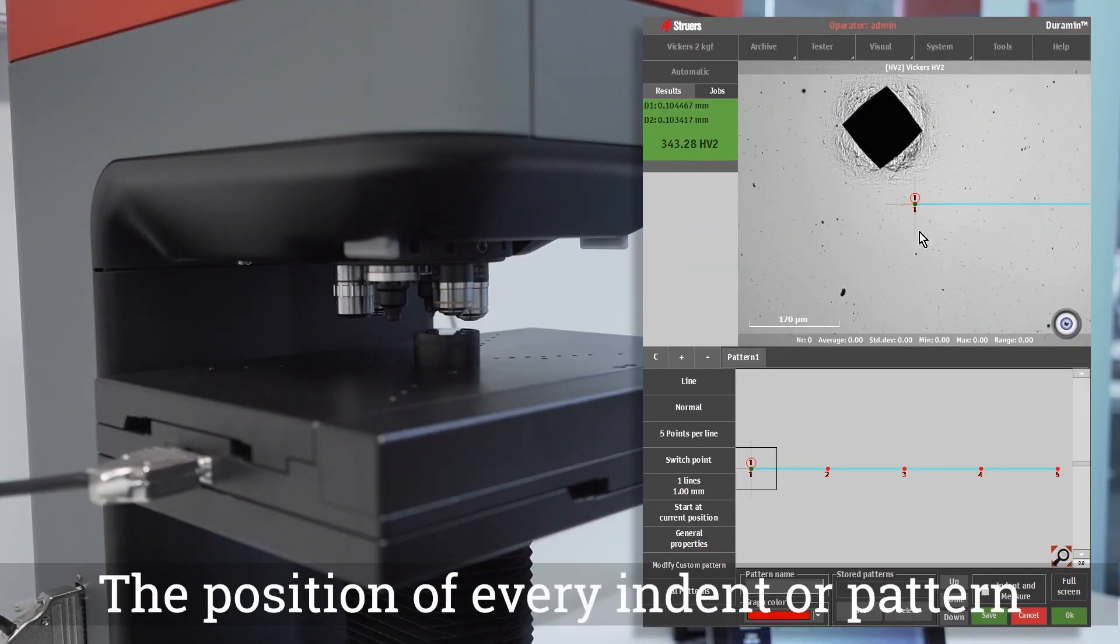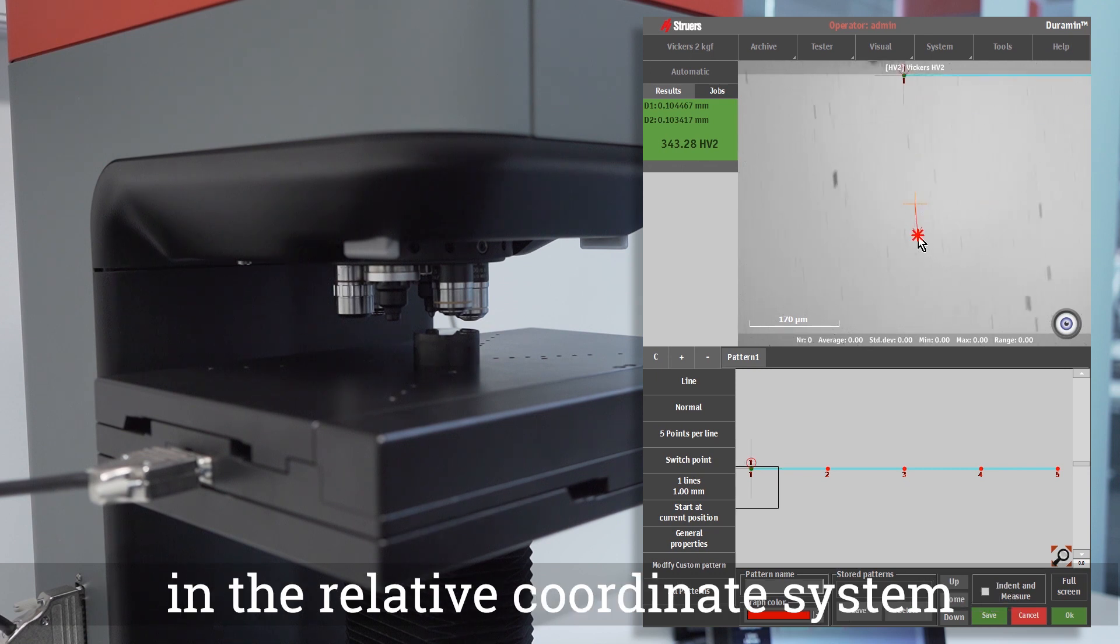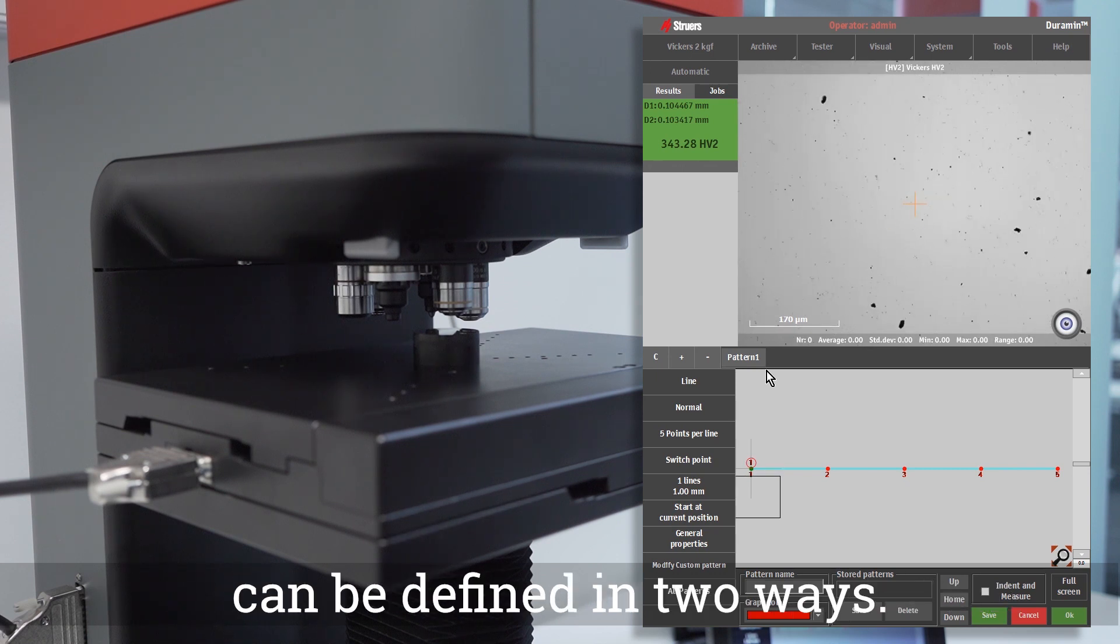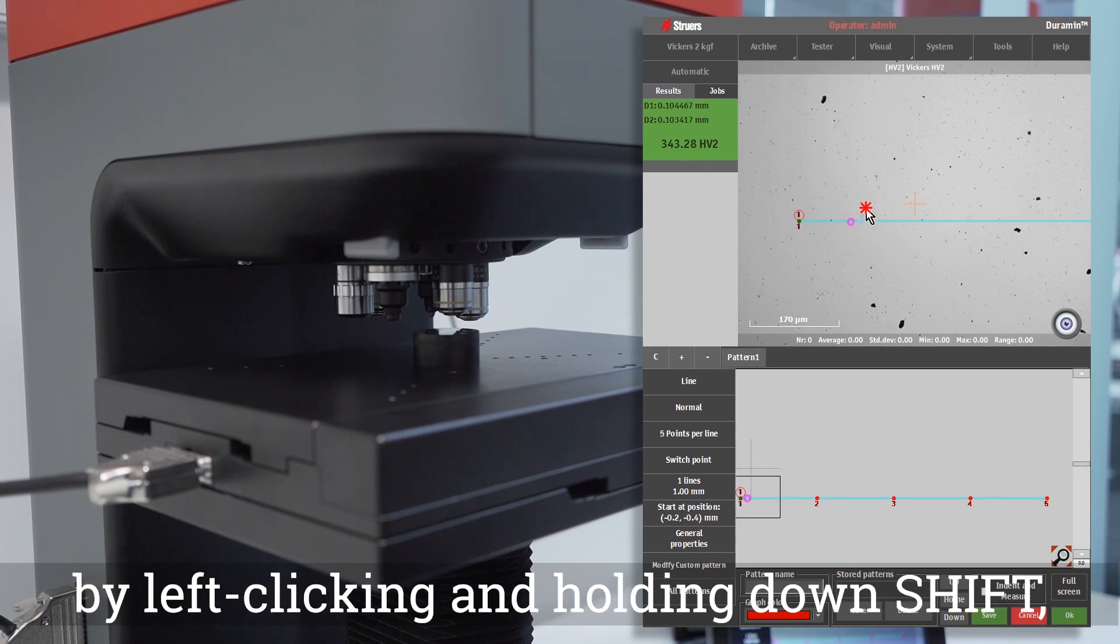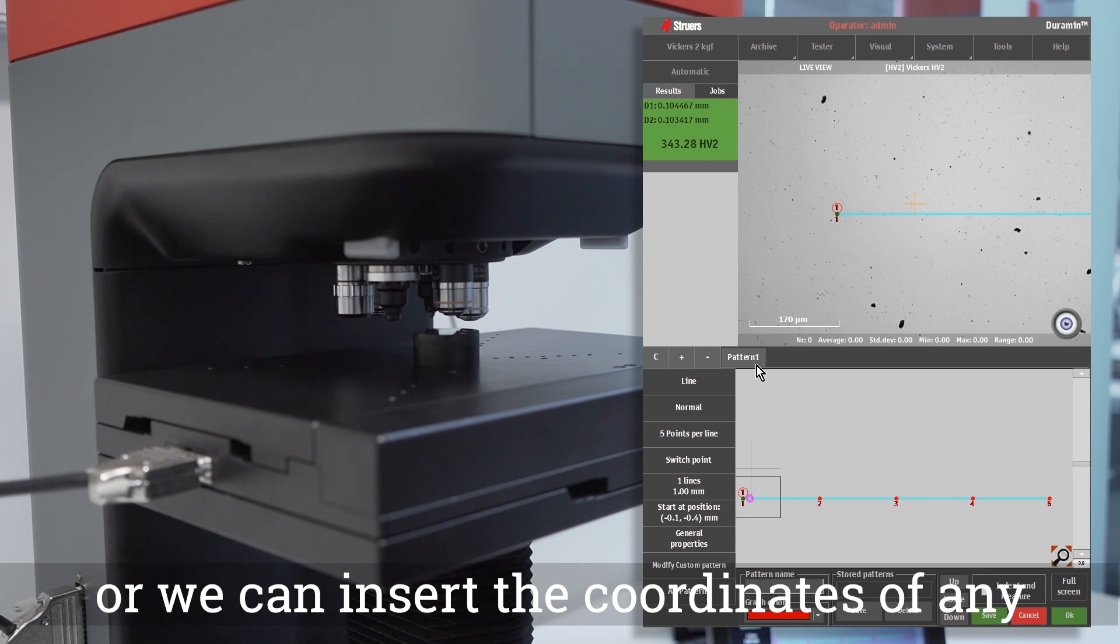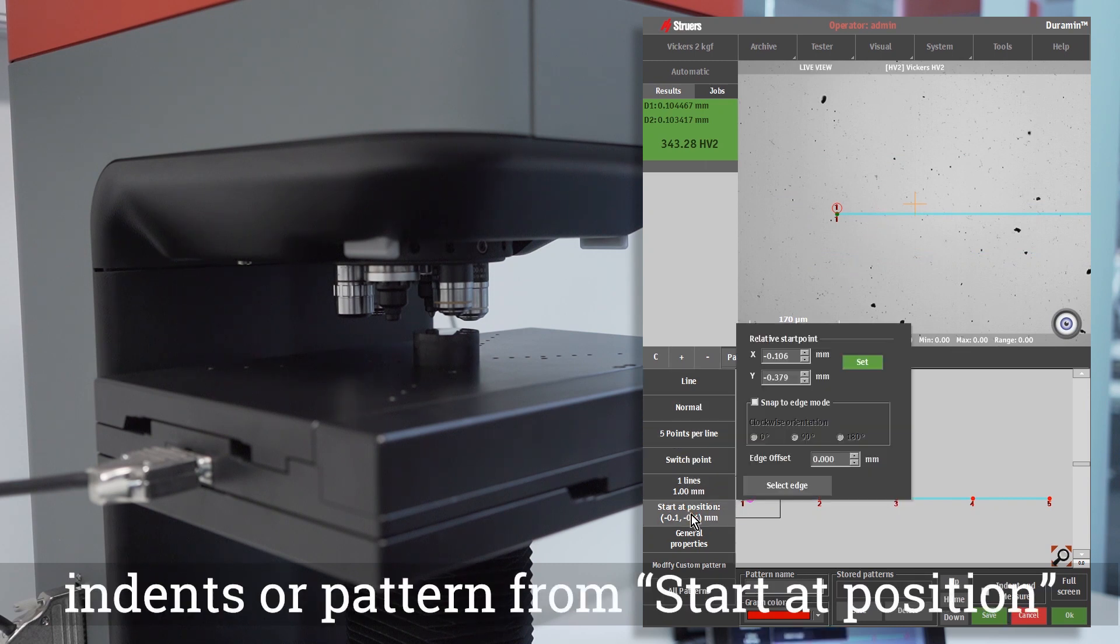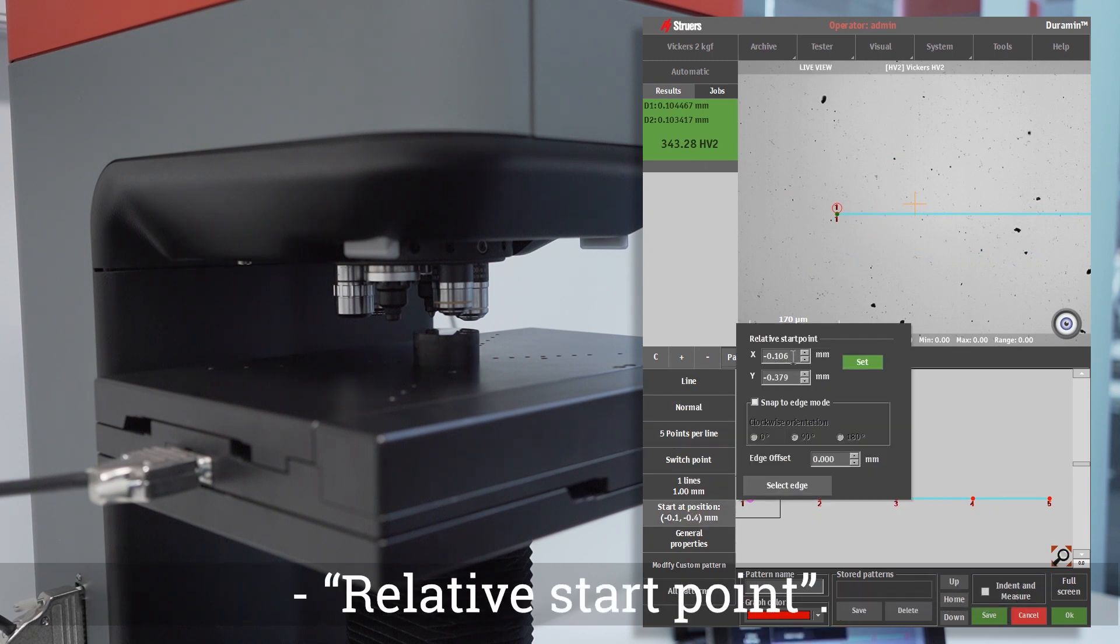The position of every indent or pattern in the relative coordinate system can be defined in two ways. We can simply drag an indent or a pattern by left clicking and holding down Shift, or we can insert the coordinates of any indent or pattern from start at position relative start point.